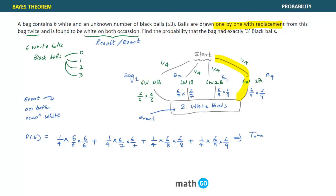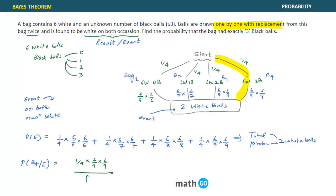The answer for Bayes is: probability that bag 4 was selected when event occurred = (1/4 × 6/9 × 6/9) divided by PE. That is the particular answer we need to find. I'm leaving the calculation for you so we can save time - understand the concept and move ahead.